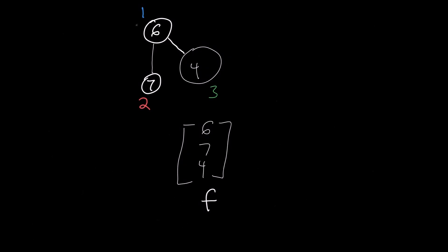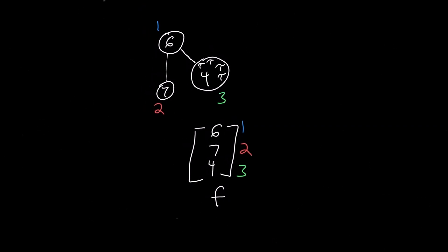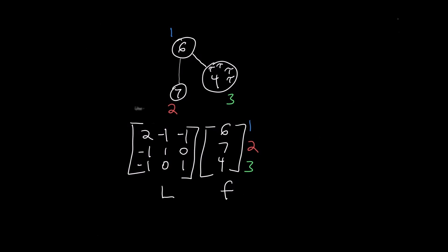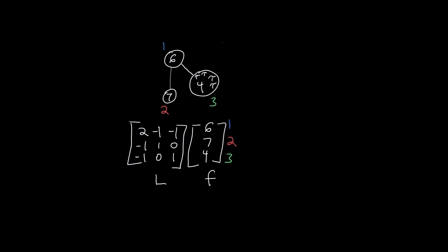F can be values like the amount of white matter in a region, or how much tau has accumulated in a region, while L captures a node's connectivity. Given that L is a matrix and F is a vector, we can perform matrix vector multiplication using L times F.